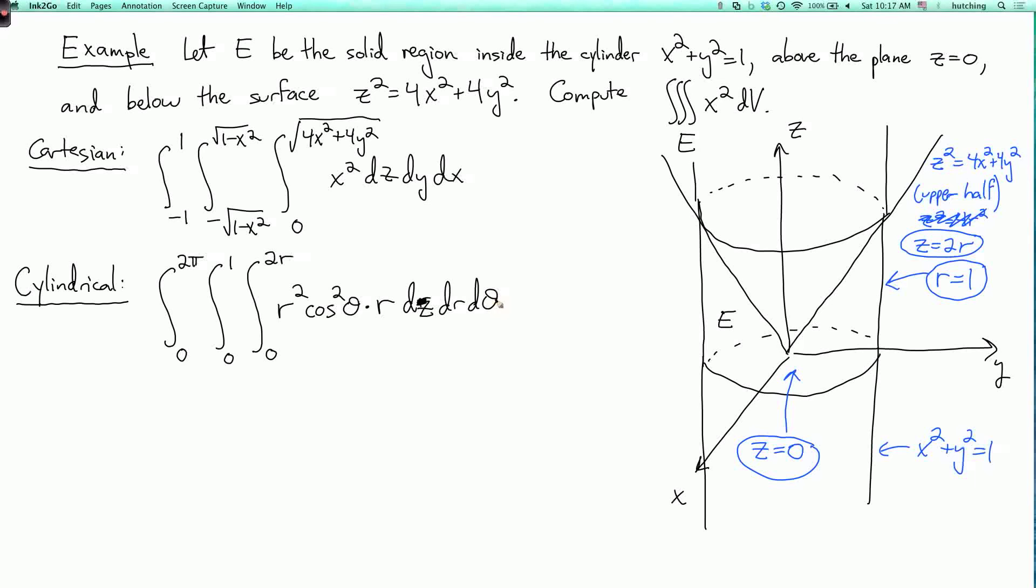So let's do the z integral first. Integral from 0 to 2pi, integral from 0 to 1. And then, we're integrating over z, and the integrand is a constant, because we're thinking of r and theta being fixed here. So I just have to multiply by the upper limit minus the lower limit. So I multiply by 2r, and I get 2r to the fourth cosine squared theta, dr, d theta.